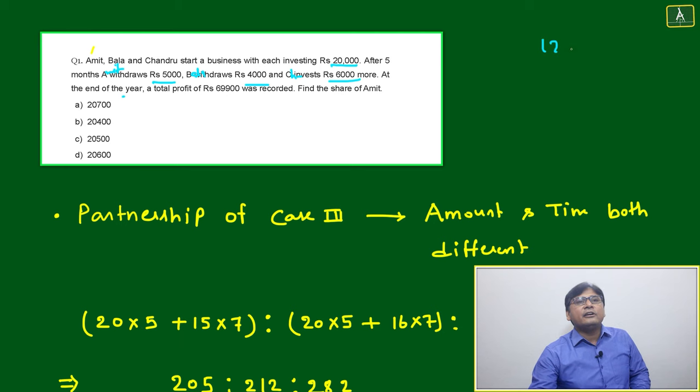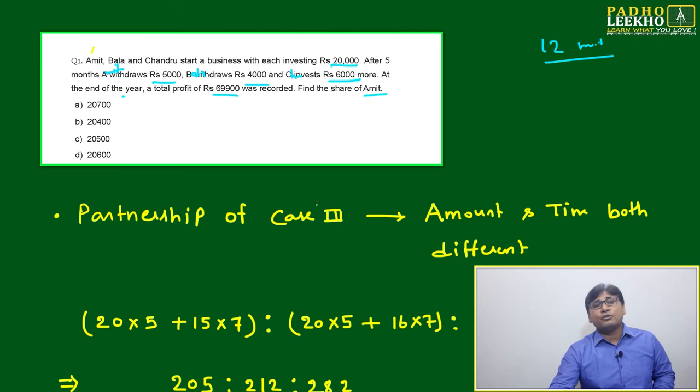At the end of the year - end of the year means 12 months, that's 100% sure, only 1 year - a total profit of 69,900 was recorded. Find the share of Amit. What is the share of Amit, how to calculate?